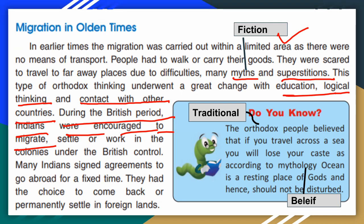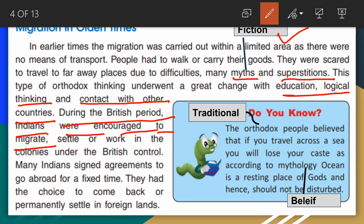So children, in olden times people moved to only limited places. Because there were no means of transport, people had to travel facing many difficulties. The problems of orthodox thinking slowly changed through education, logical thinking, and contact with other countries. This was our summary of migration in olden times.